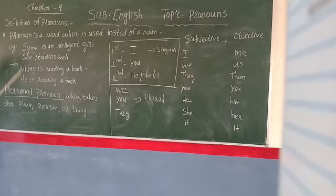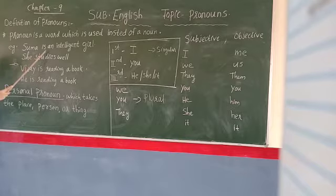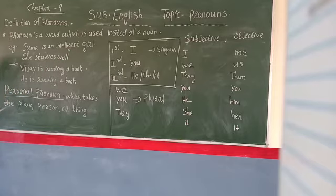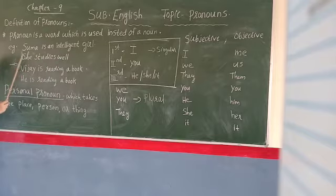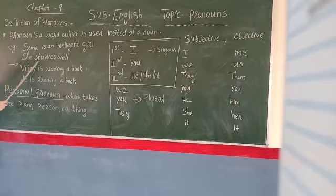Now let us look at the examples. First sentence: Summa is an intelligent girl. She studies well. Instead of repeating again and again the name of Summa, we used 'she.' The pronoun of Summa is 'she.' She studies well.